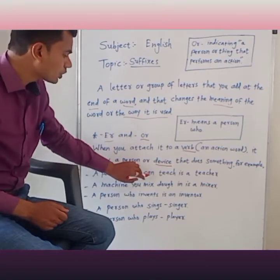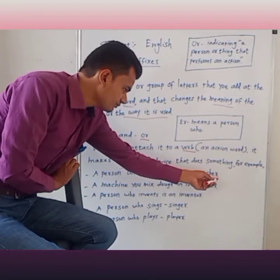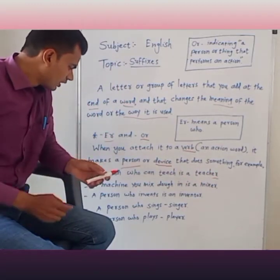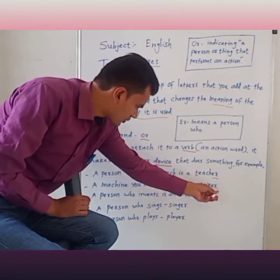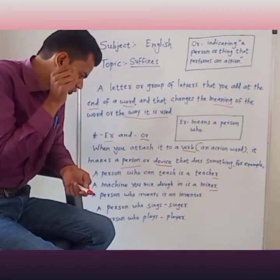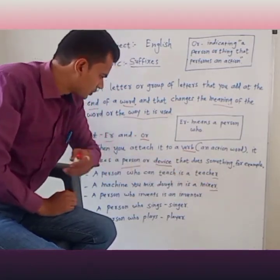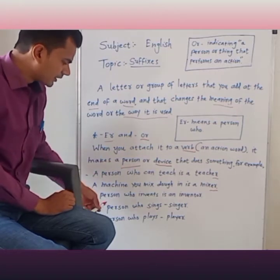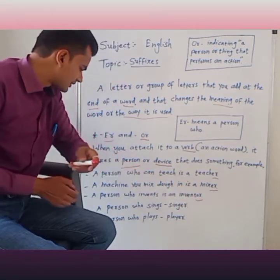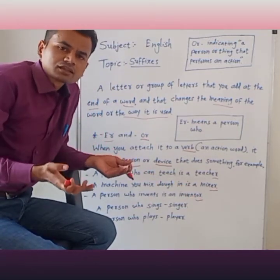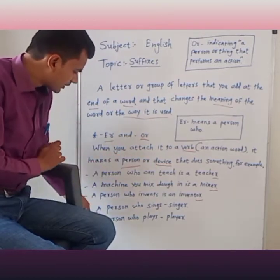First one, a person who can teach. This is a person who can teach. That is a teacher. The second one, a machine you mix. It is a mixture. A person who invents is an inventor. A person who sings is a singer.